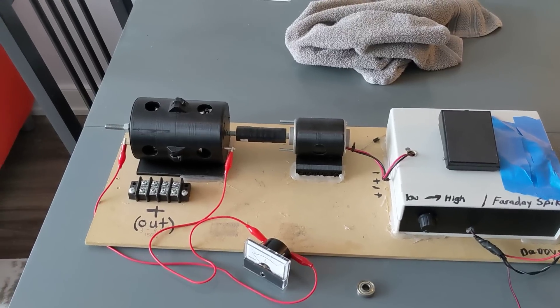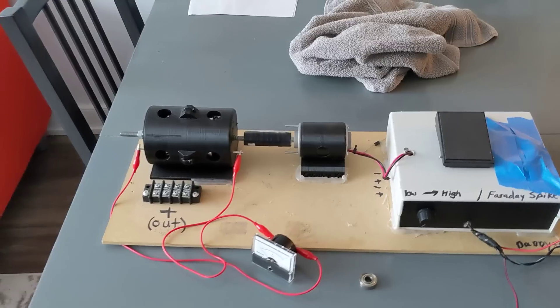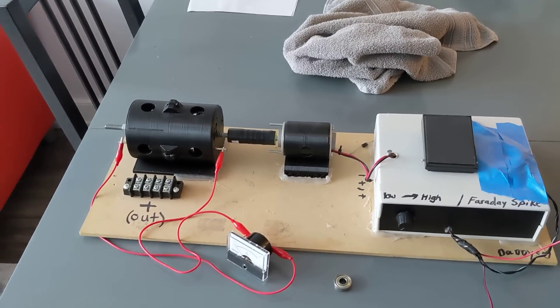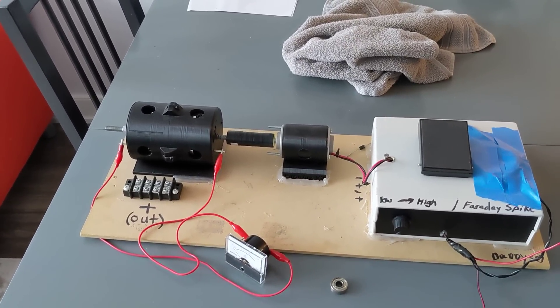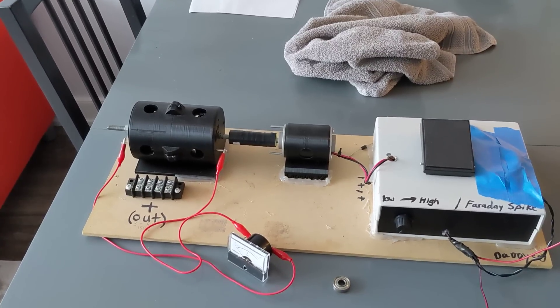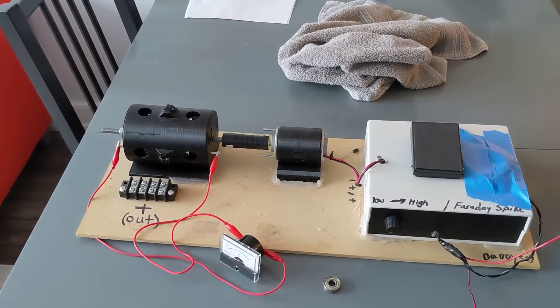So that's when Nikola Tesla got hold of it and he came up with the homopolar generator. So years later, a guy by the name of Bruce De Palma created the thing called the N machine.